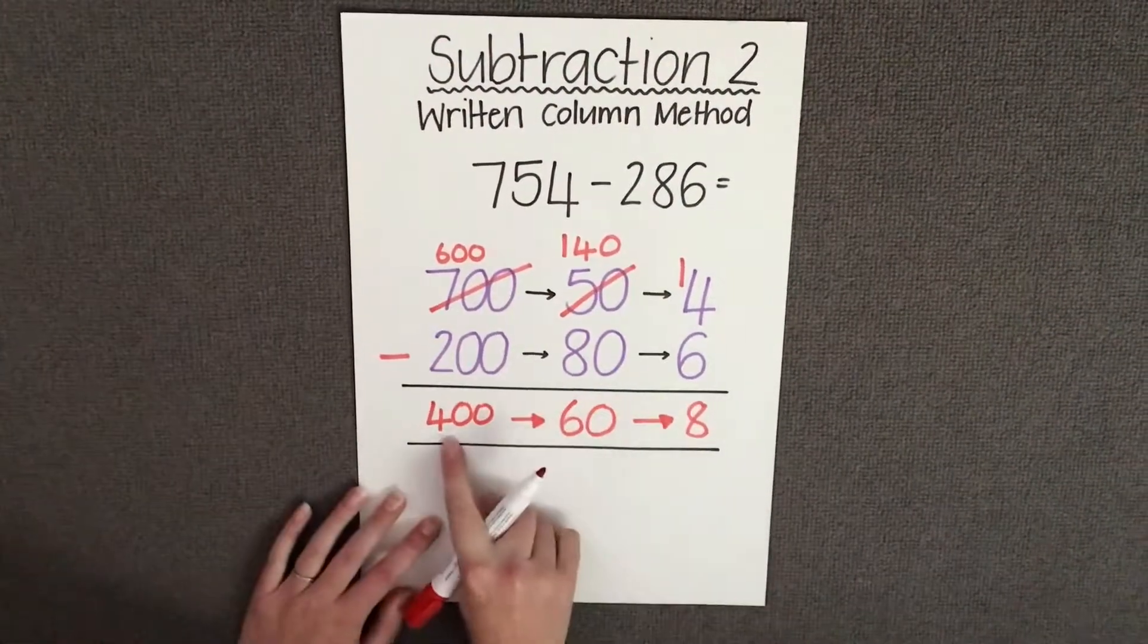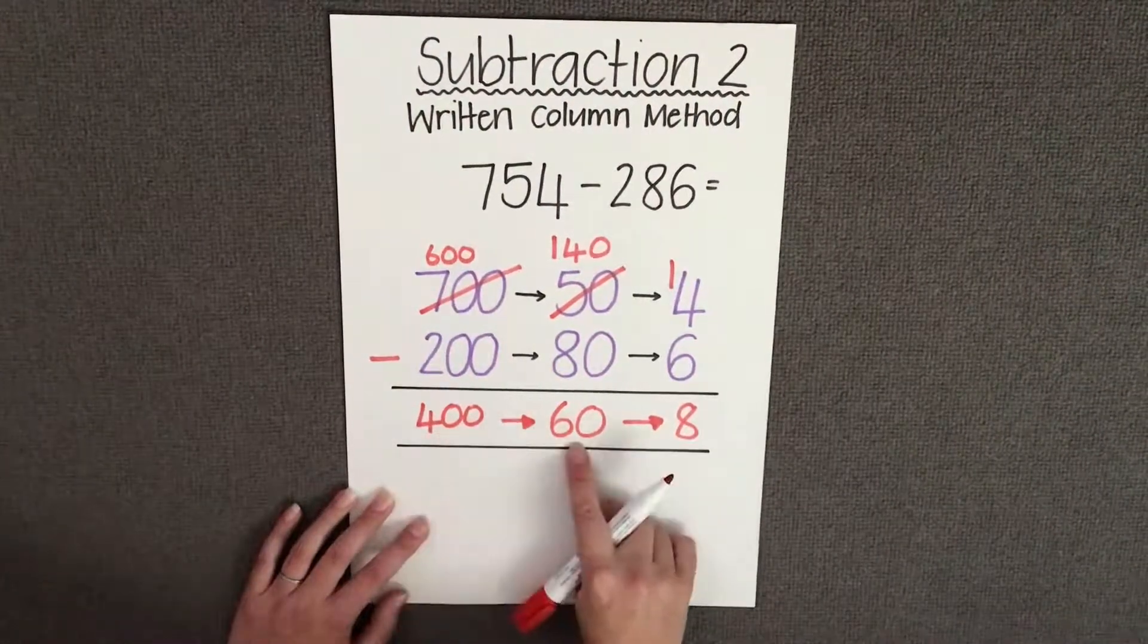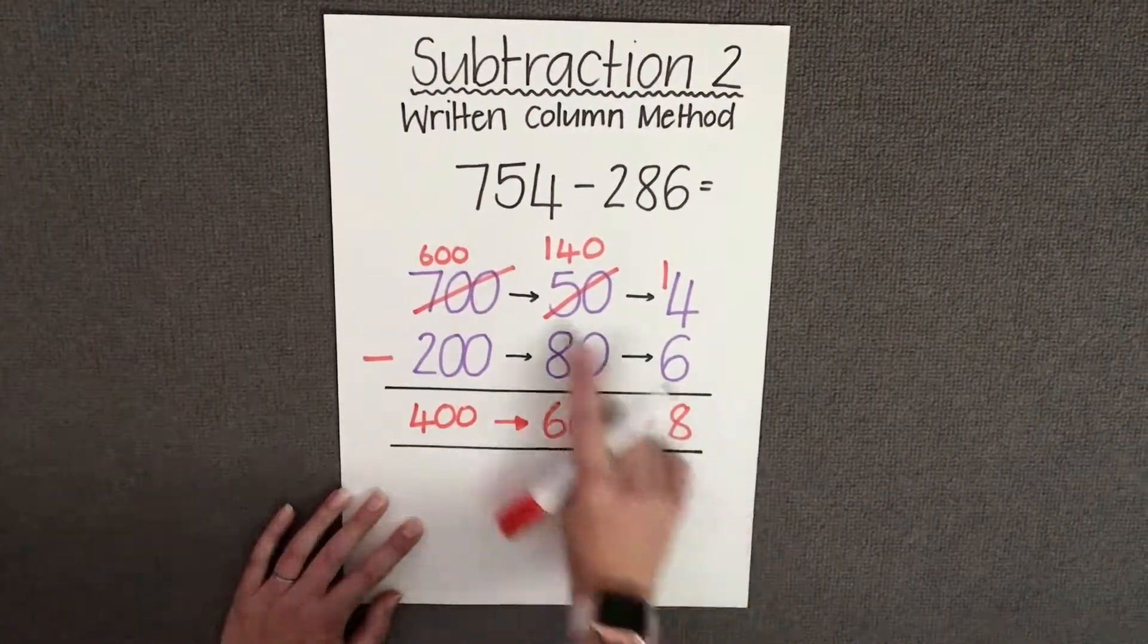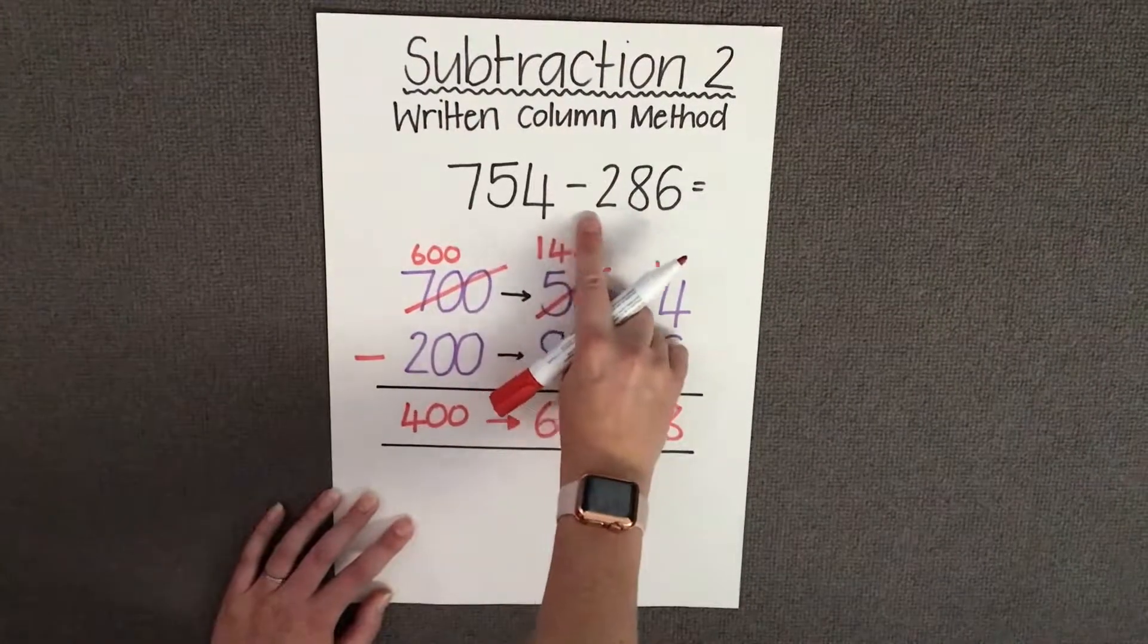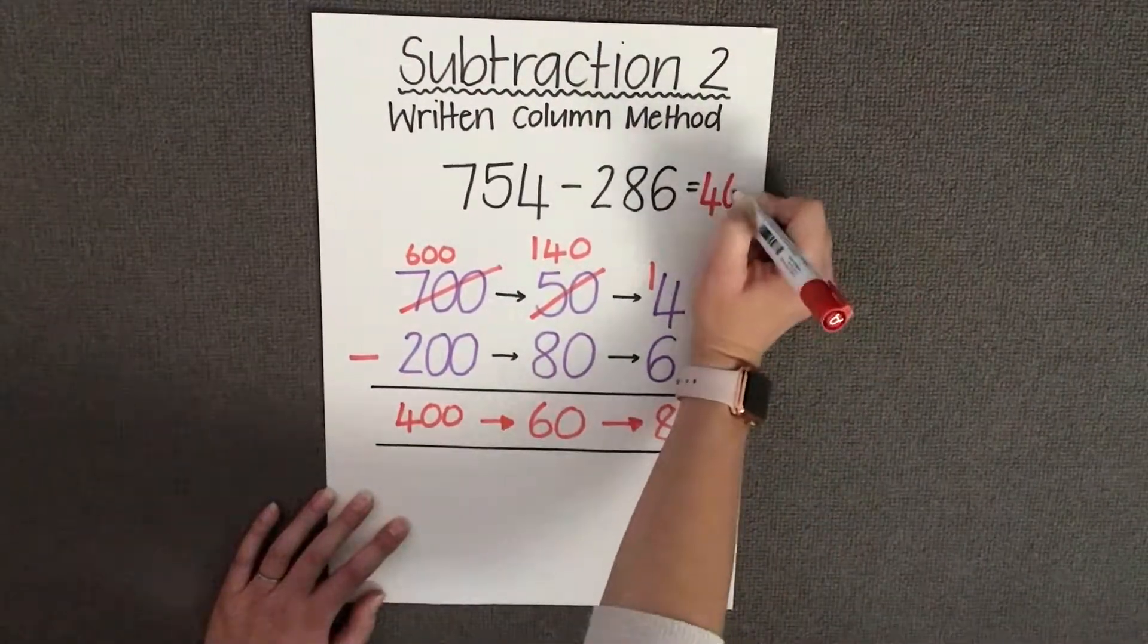I have now 400, 60 and 8 ones. So my answer is 468. Therefore the answer to 754 take away 286 equals 468.